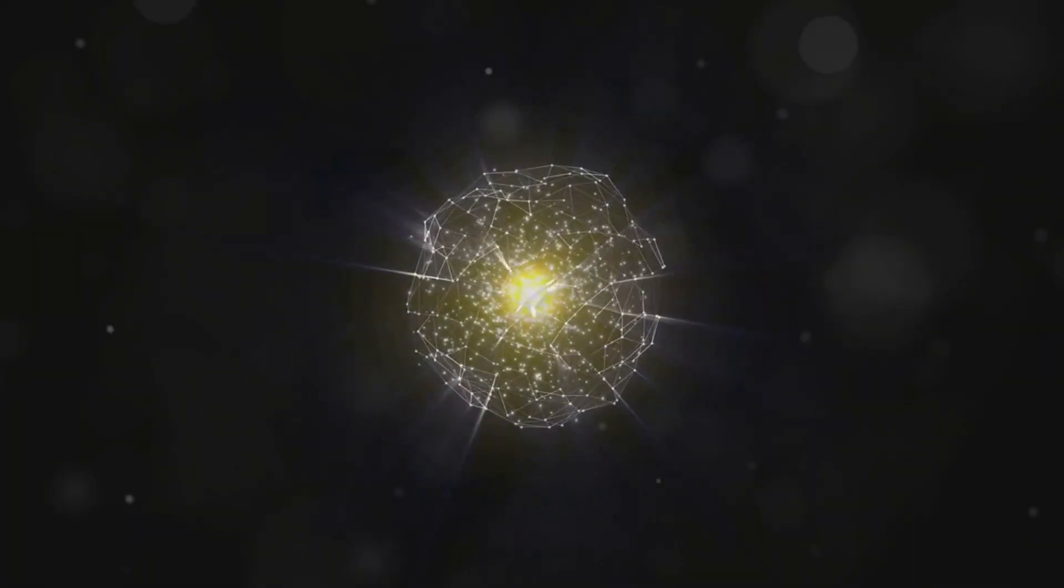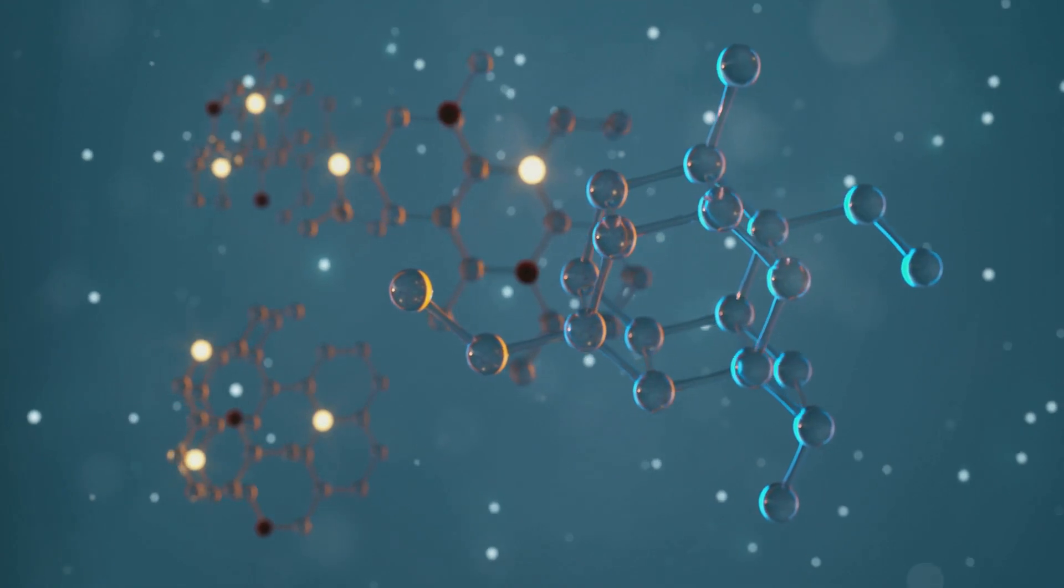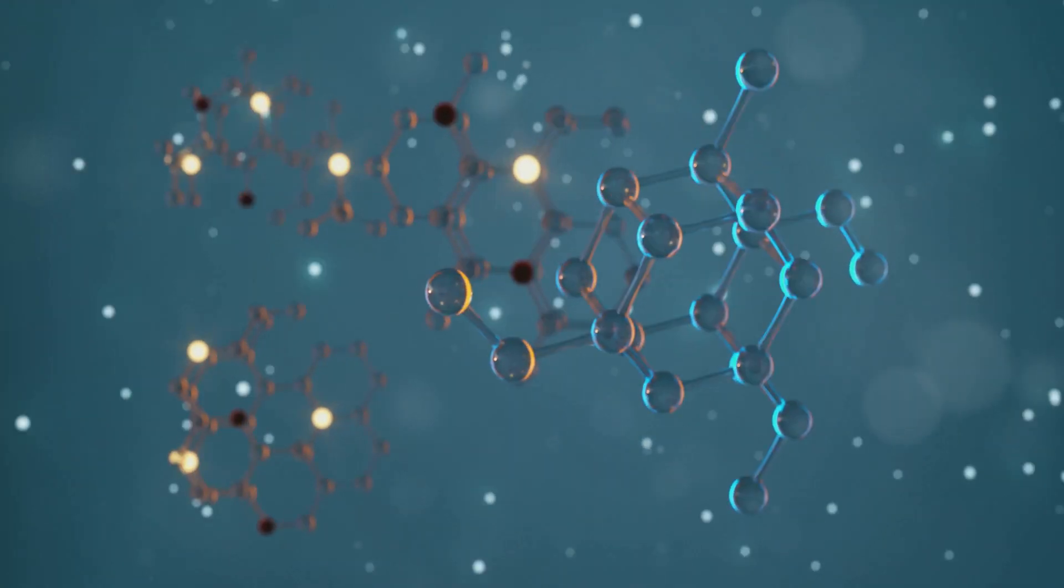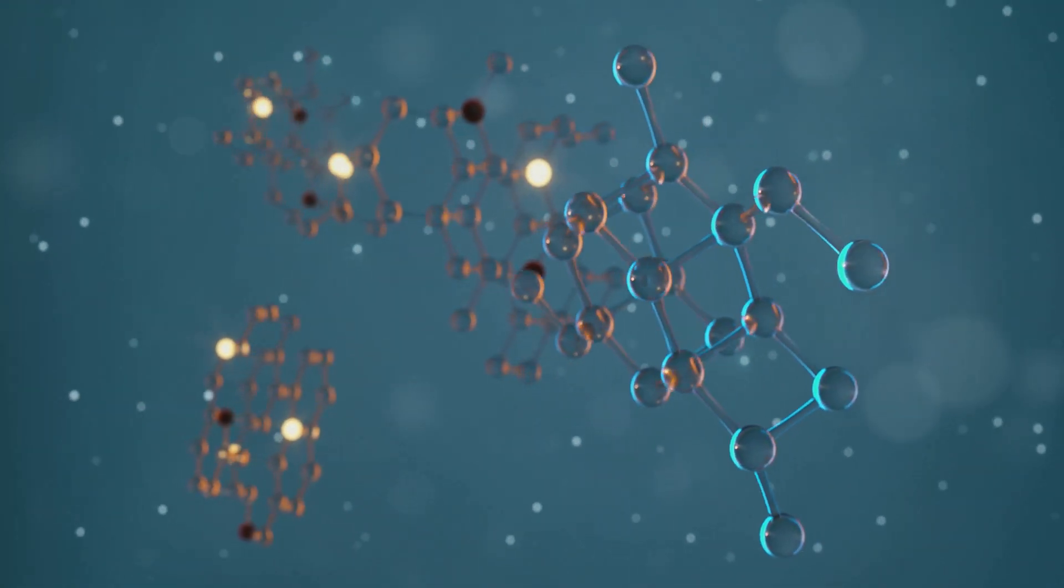Adding a second dimension transforms the point-like atom into a flat disk. This disk, confined to a two-dimensional plane, can now move in two independent directions. The atom's interactions with other particles become more intricate, governed by forces acting within the plane.